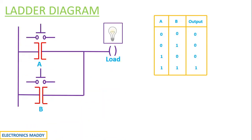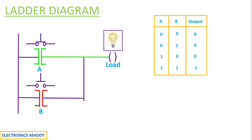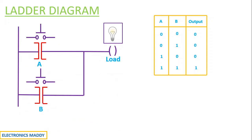Case three: when I am actually pressing push button switch A, consequently the coil is actually energized and current starts flowing through the load in this particular fashion. Case four: when I energize both of them by pressing both the push button switches, consequently both coil A and B are actually energized and current starts flowing through the load and the light glows.